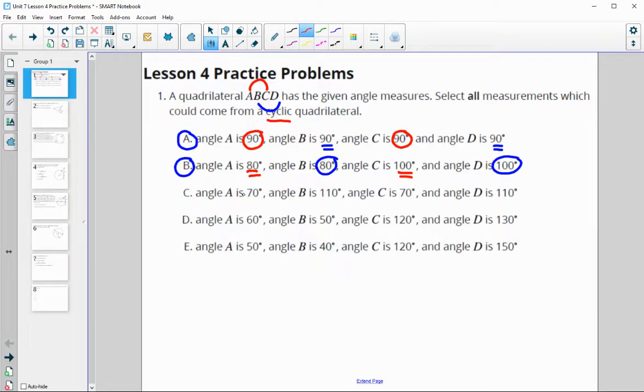In C, angle A is 70 and C is 70. 70 plus 70 does not equal 180, so this one is not cyclic.